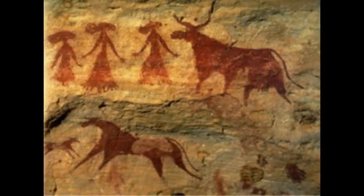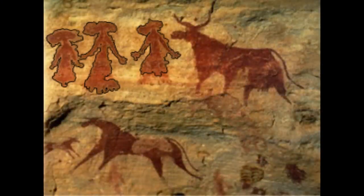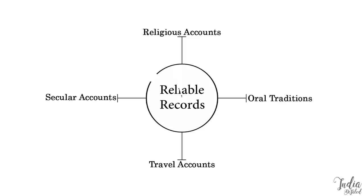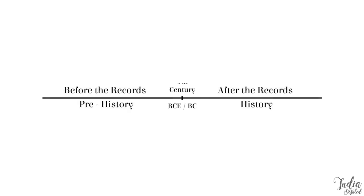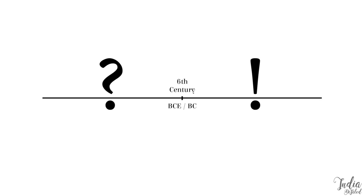For instance, we don't know what these ladies here are up to exactly. So for an account to count as a reliable record, we should be able to cross-reference it with these contextual evidences. So the period for which records are available is called history, and that for which records are not available is prehistory. In India, the prehistoric period lasts up to the 6th century BC, and then we have records available after that.